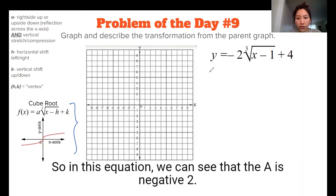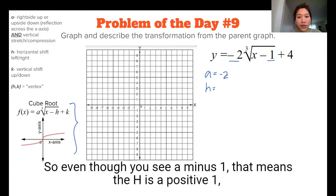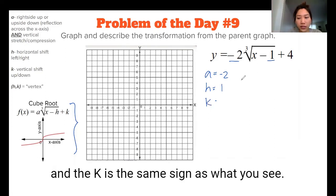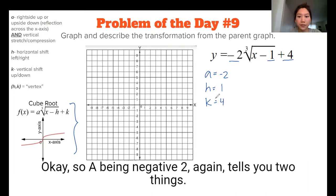So in this equation, we can see that the a is negative 2, the h is again opposite of the sign that you see. So even though you see a minus 1, that means that h is a positive 1. And the k is the same sign as what you see. So if you see a plus 4, then it's also a positive 4.